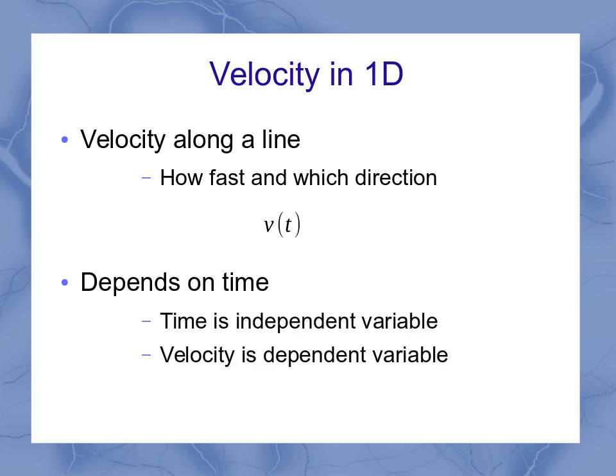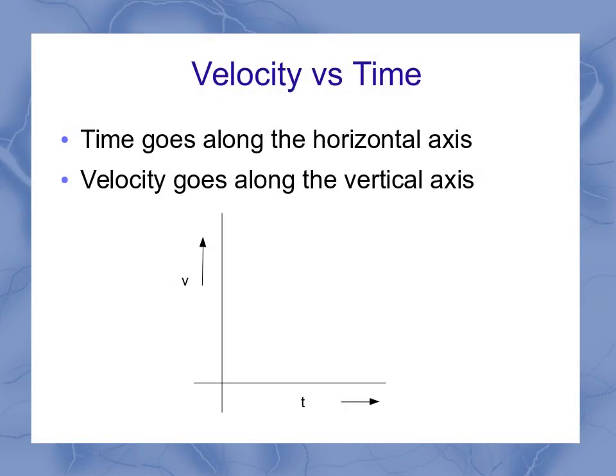Our time is the independent variable and velocity is the dependent variable. Because of this, time is always going to be plotted along our horizontal axis, and velocity is always going to go along the vertical axis.